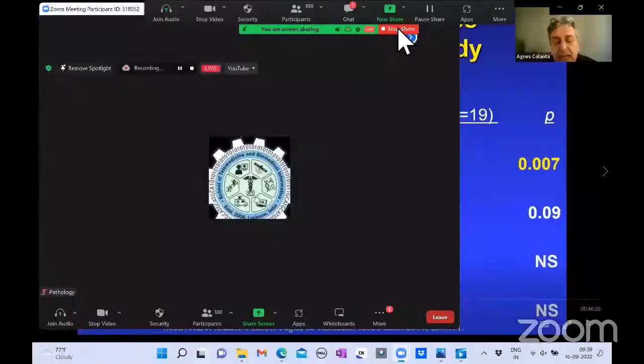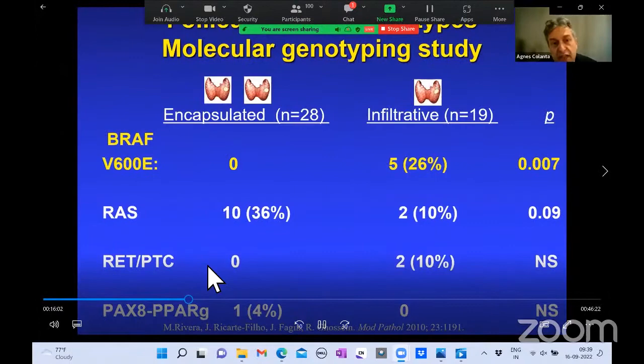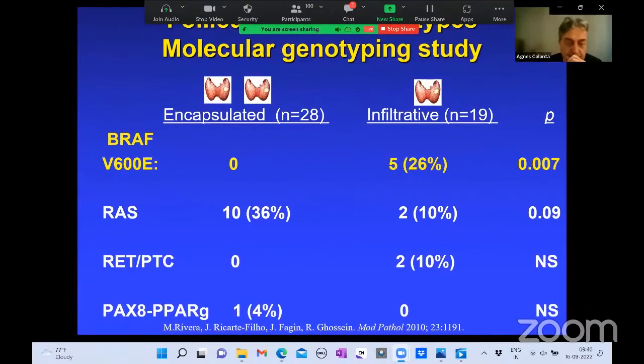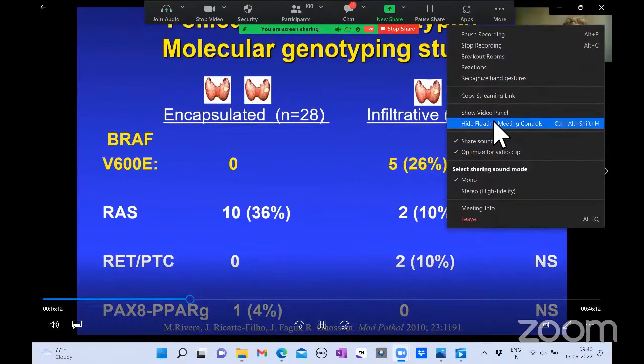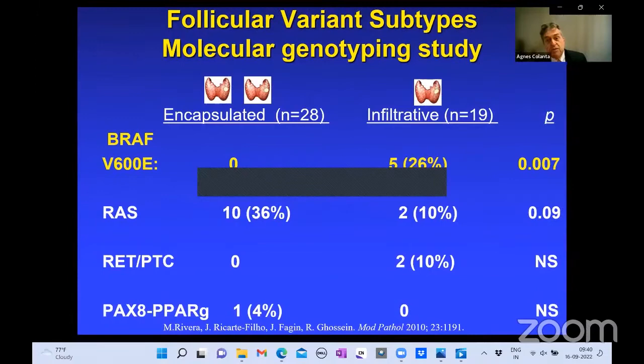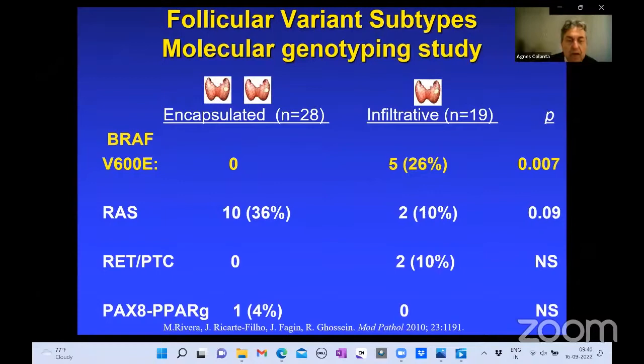Since we have two subtypes of follicular variant, we were interested in the genotype. In a 2010 study, the encapsulated follicular variant had 36% RAS mutations, while the infiltrative follicular variant had BRAF mutations in 26%, with some RAS mutations but not as many. The encapsulated follicular variant can also have RET/PTC rearrangements and PAX8/PPARgamma fusions.